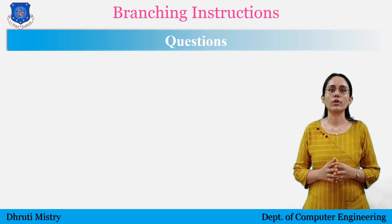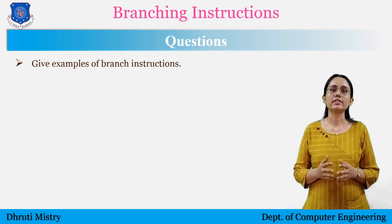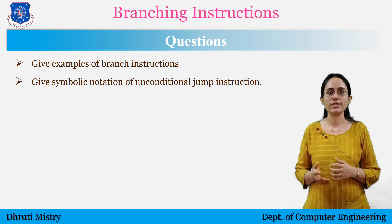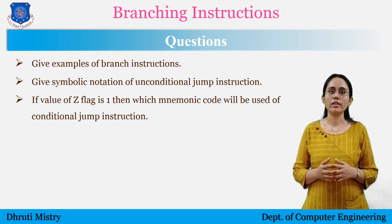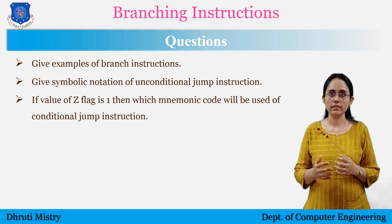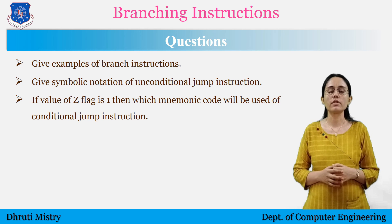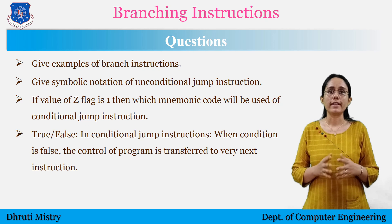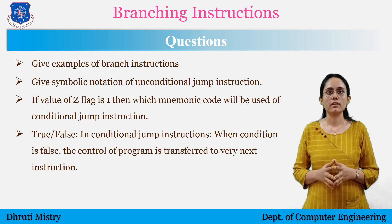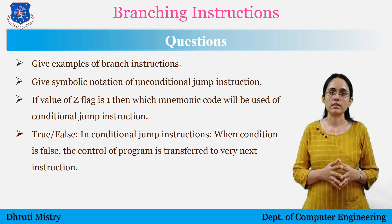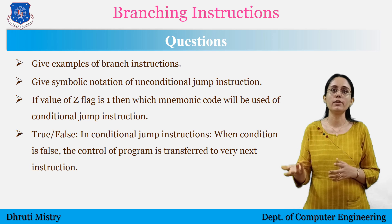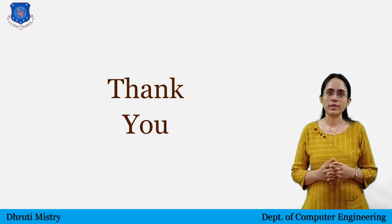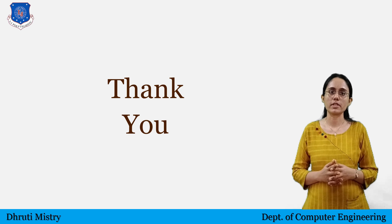Here are some questions for you. First: give examples of branch instructions. Second: give the symbolic notation of the unconditional jump instruction. Third: if the value of the Z flag is 1, which mnemonic code will be used for the conditional jump instruction? State true or false: in a conditional jump instruction, when the condition is false, the control of the program is transferred to the very next instruction. Thank you for watching this video. Please like, share and subscribe to our channel.